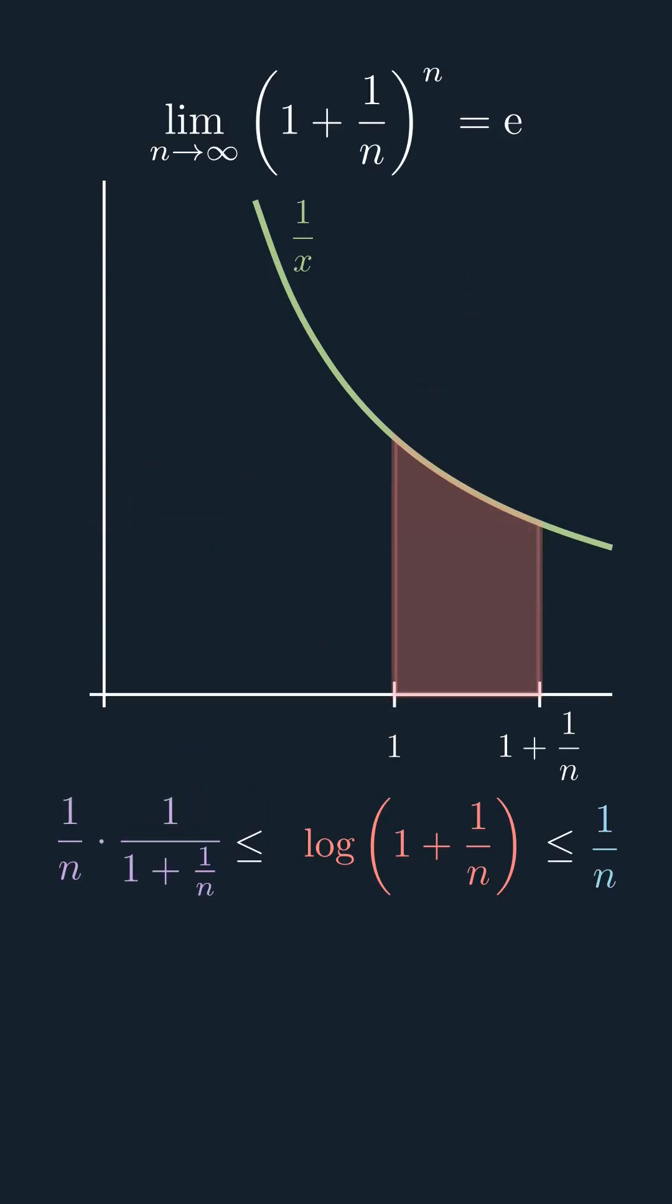We multiply both sides by n and simplify a little bit. Due to the logarithm laws, we can now move the n inside and see that the whole logarithm function is bounded by n over n plus 1 and 1.